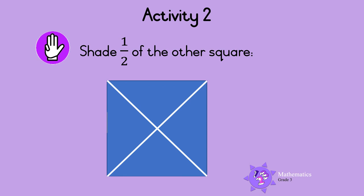Now shade 1 half of the other square. The square is made up of 4 parts, and half of the 4 parts must be shaded. Half of 4 is 2. So 2 parts must be shaded: 1, 2. That's it. Now half the square is shaded. Well done. See you next time.